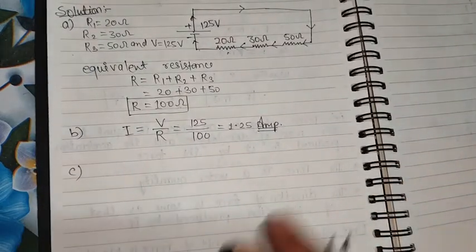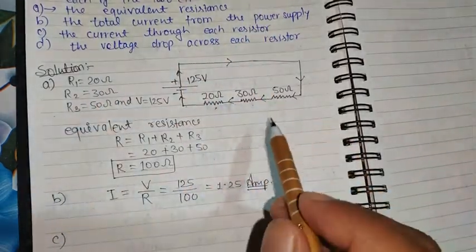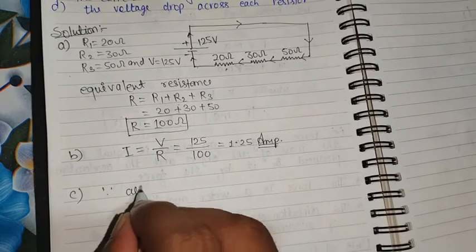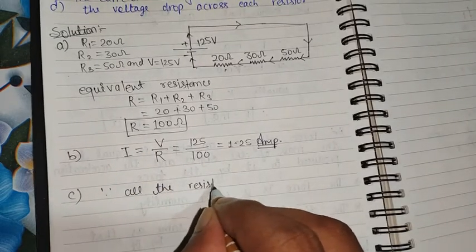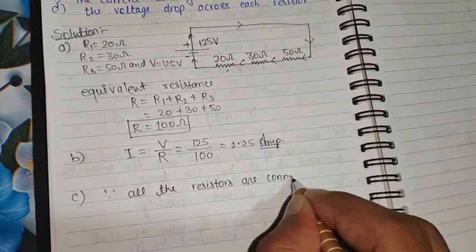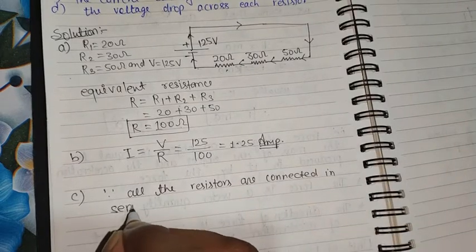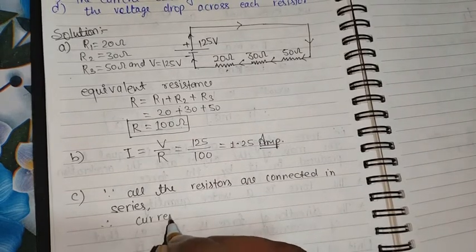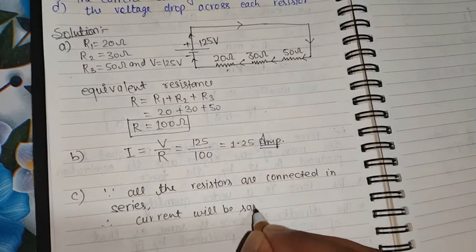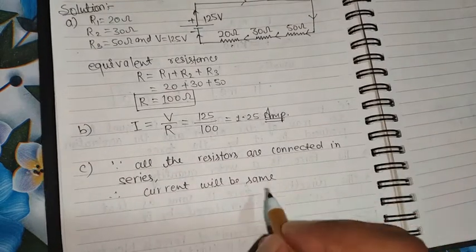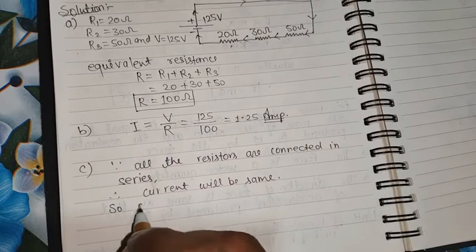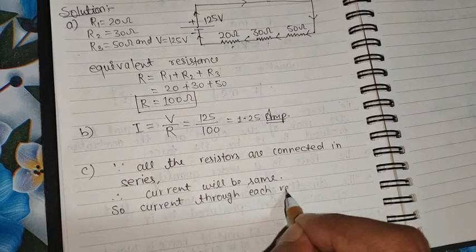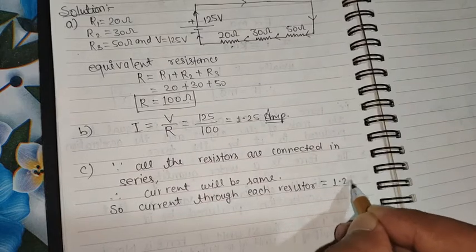Question number three is the current through each resistor. Since all the resistors are connected in series, the current will be the same through each one. Therefore, the current through each resistor is equal to 1.25 ampere.